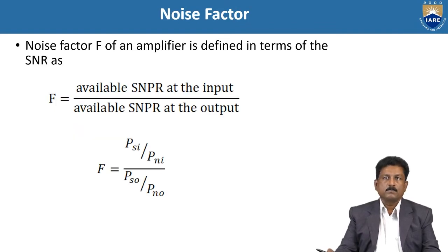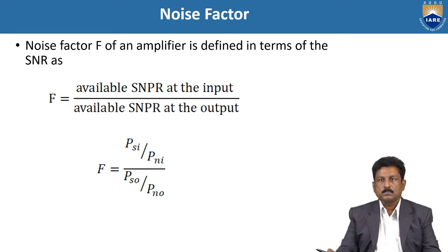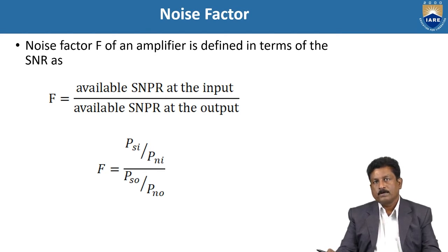The noise factor for an amplifier is defined in terms of the SNR. F equals the available SNR at the input divided by the available SNR at the output — that is, (PSI / PNI) divided by (PSO / PNO). This is the calculation of the noise factor for a given amplifier.